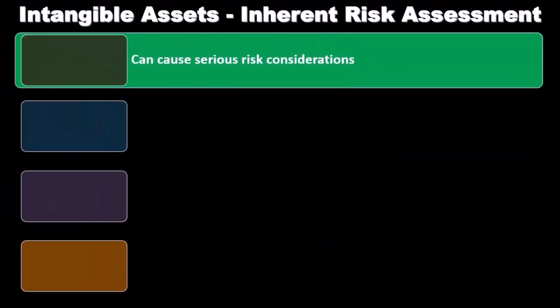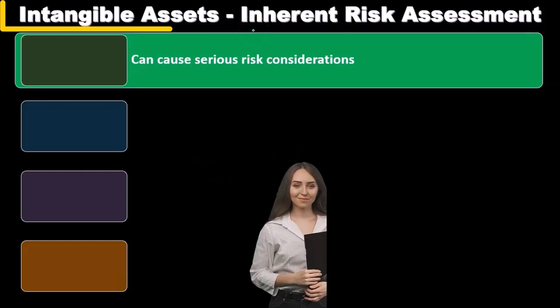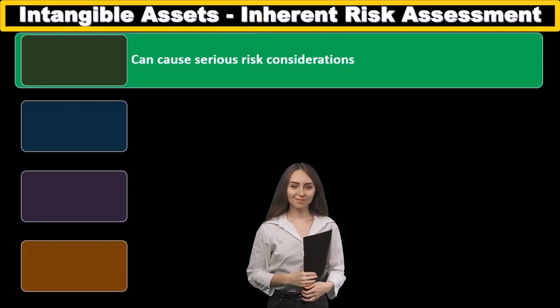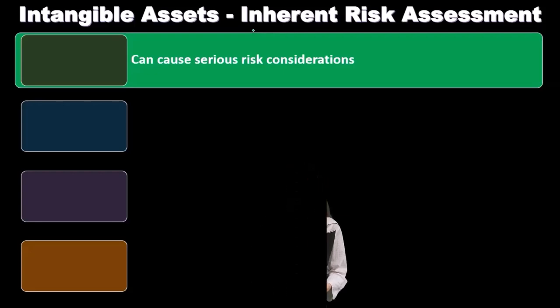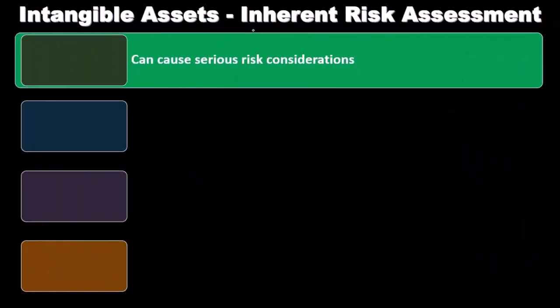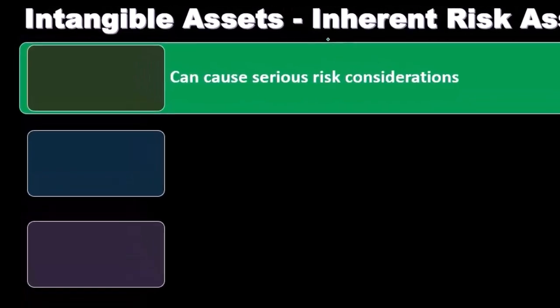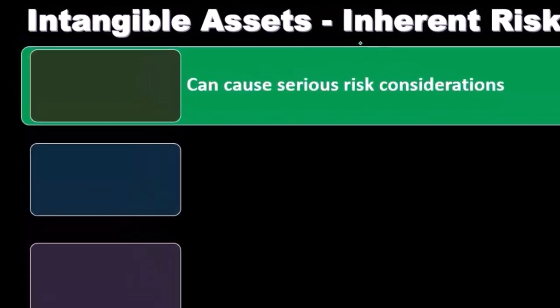Now we're going to discuss inherent risks related to intangible assets. Our goal as auditors is to think about the inherent risk, the control risk, and then to set the detection risk so that we can determine how much substantive testing we need to do. Control risk relates to things within the company's control — the business they are in and the controls they put in place related to the risks of that business.